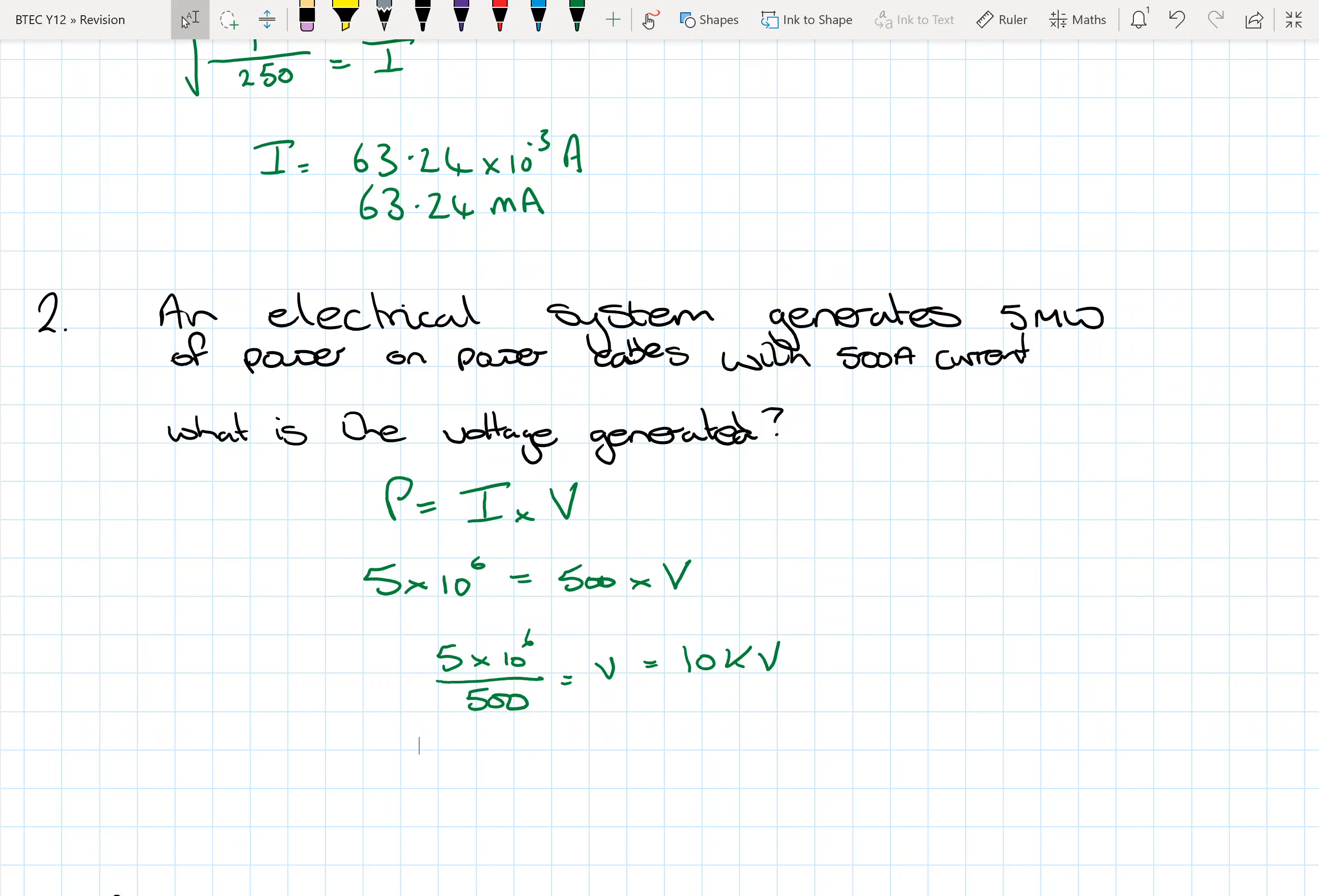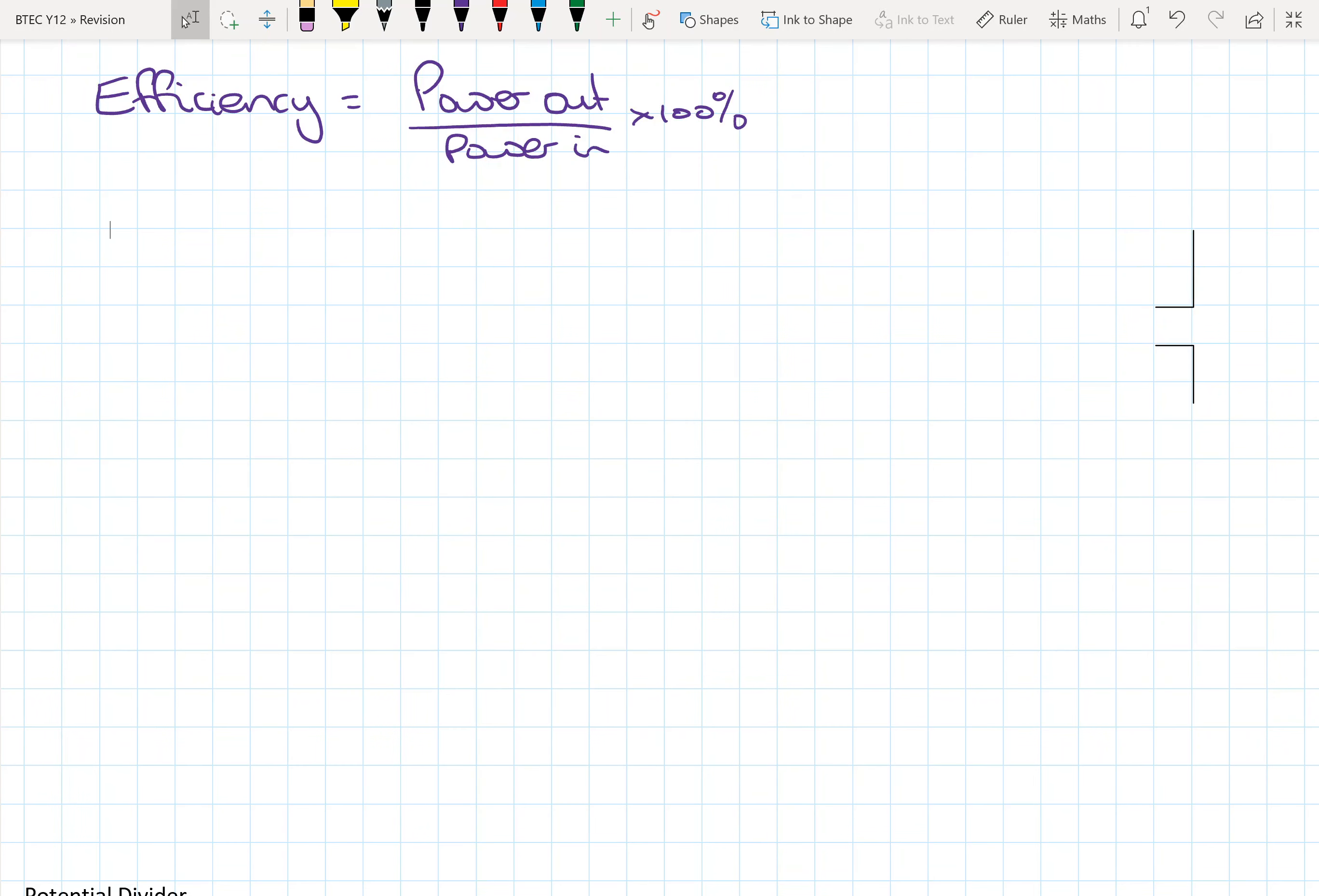Okay, so let's look a little bit about power and efficiency then. So efficiency is power out divided by power in times by 100. So it is usually represented by a percentage. On your former sheet, it's just got power out divided by power in, but it is normally represented by a percentage. So we're going to put the times by 100 in.